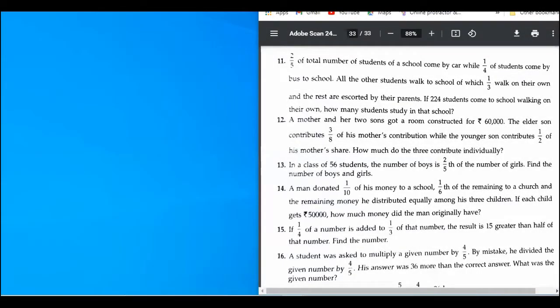Let's look at question number 11. Can you read the question for me? Yes. Two-fifths of a total number of students of a school come by car, while one-fourth of students come by bus to school. All the other students walk to school, of which one-third walk on their own, and the rest are escorted by their parents. If 224 students come to school walking on their own, how many students study in that school?